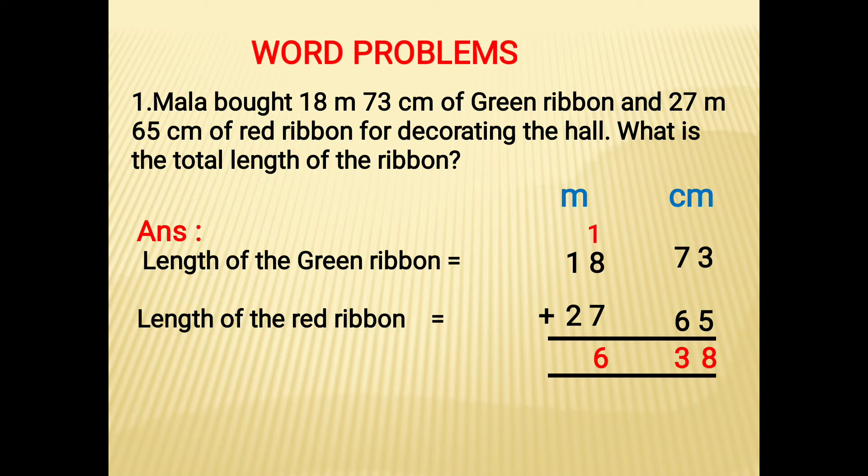Now add the value: 8 plus 7 is 15, 15 plus 1 is 16. 16 is again a two-digit number, so 6 in the ones place and 1 goes to carry over. Now add the value: 1 plus 2 is 3, 3 plus 1 is 4. Therefore the total length of the ribbon is 46m 38cm.